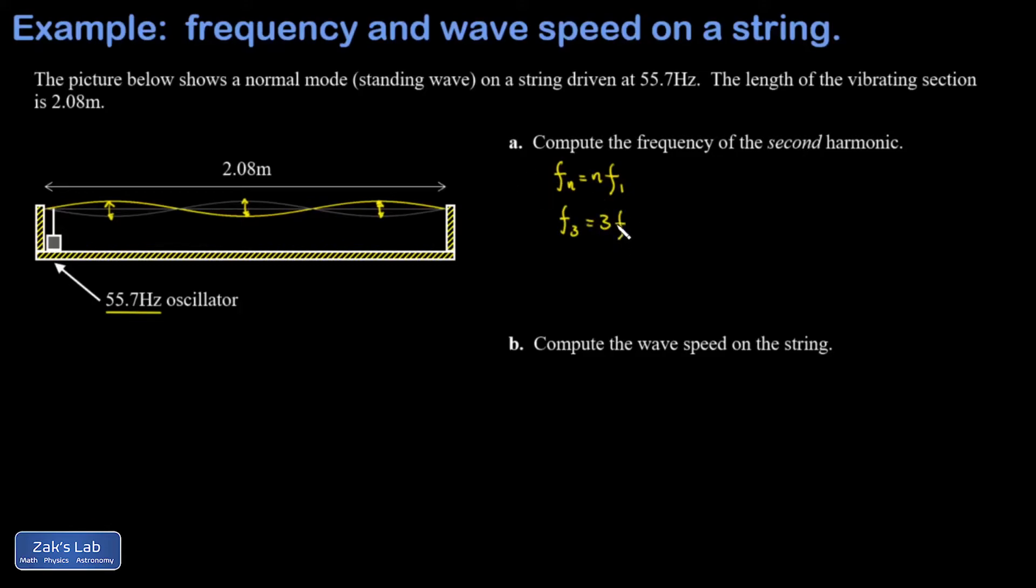We plug in n equals three. We already have the frequency of the third harmonic. All I have to do is divide that by three and I've got the frequency of the fundamental, so that's just f3 over 3. When I divide my 55.7 by 3, I arrive at a fundamental frequency of 18.57 hertz.